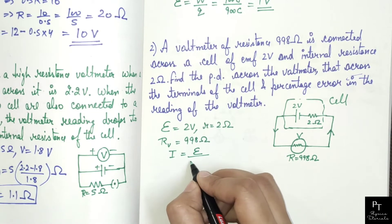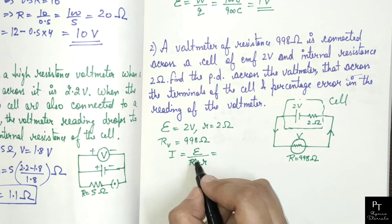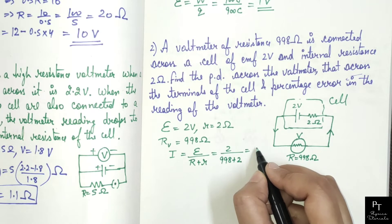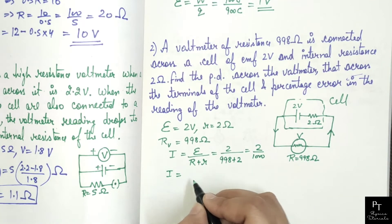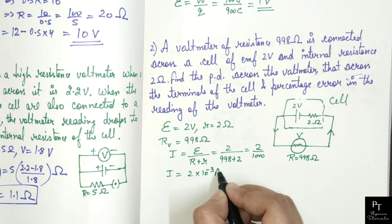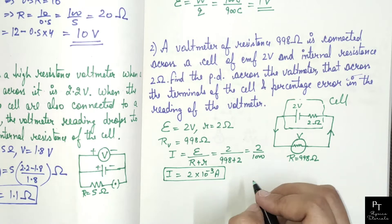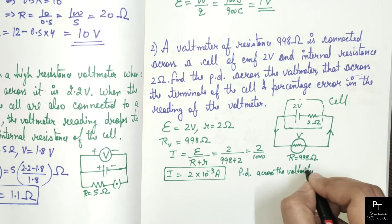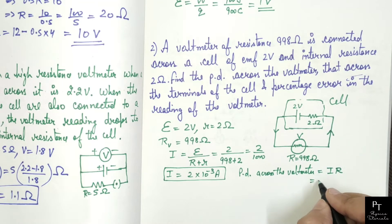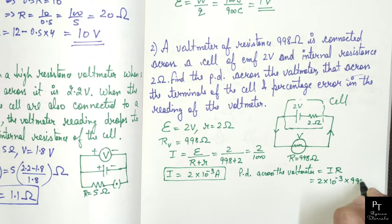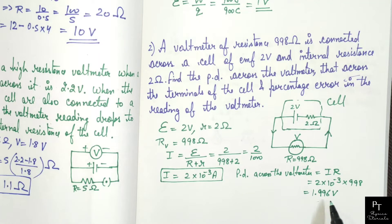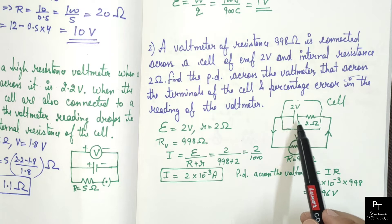Current in the circuit will be EMF divided by total resistance: 2 upon 998 plus 2 ohms, which is 2 upon 1000. So current equals to 2 × 10⁻³ amperes. Potential difference across the voltmeter is I × R: current is 2 × 10⁻³ and resistance is 998 ohms. After multiplication you will get answer equals to 1.996 volts. This is the potential difference across the voltmeter, and the same potential difference is obtained across the terminals of the cell.